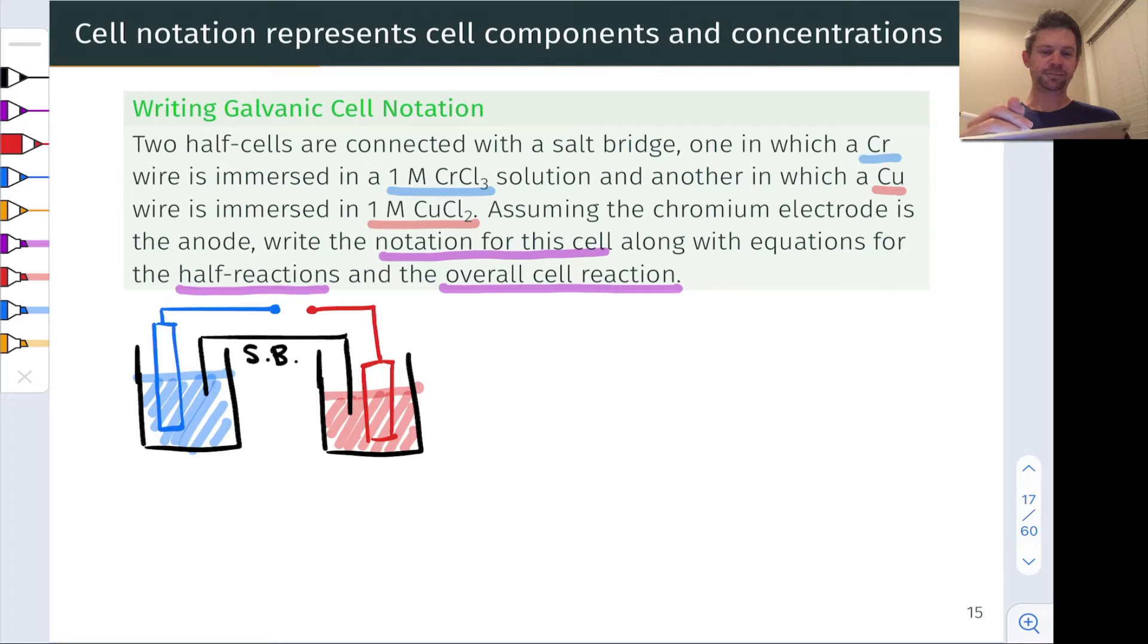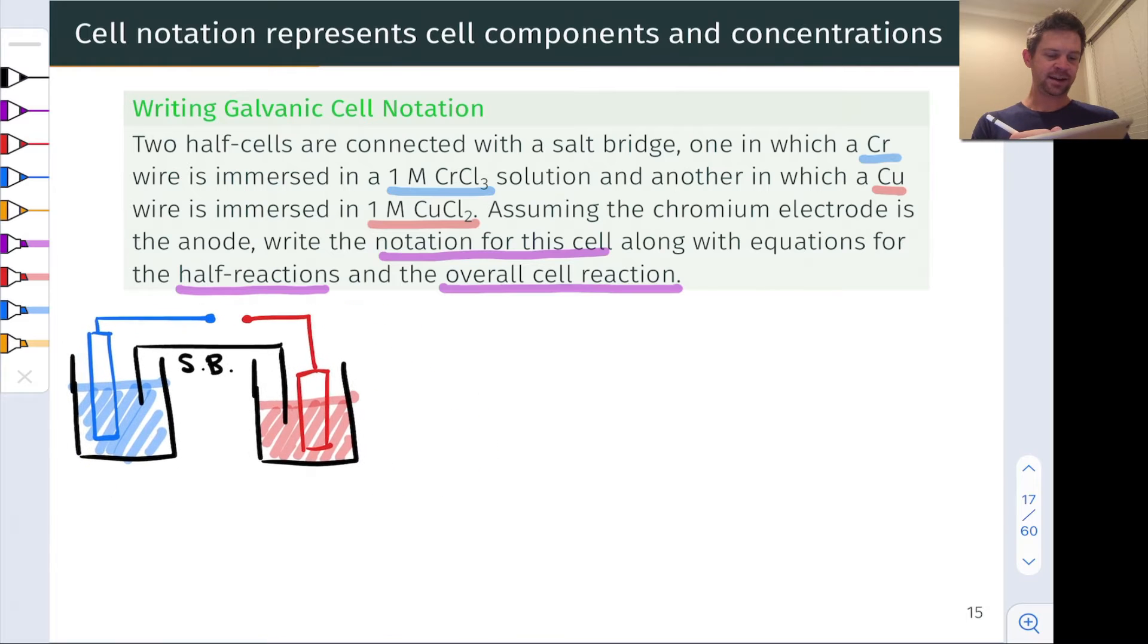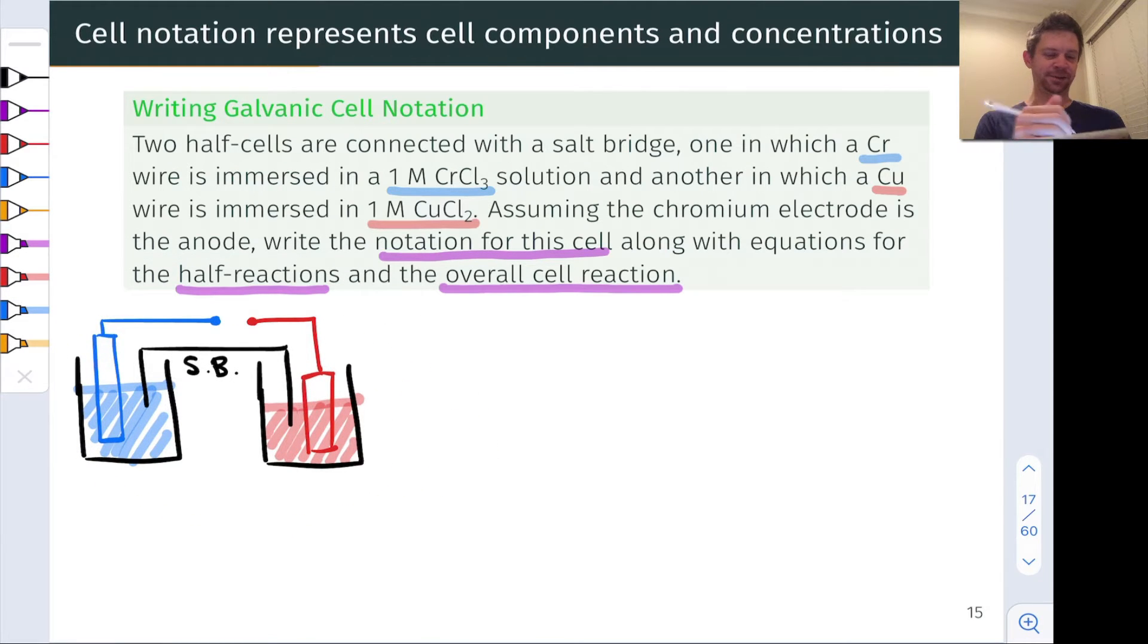All right, so here's a little schematic of the galvanic cell we're looking at here. The anode is color coded in blue and the cathode in red. And let's recall that the anode has chromium metal as the reduced component and a one molar solution of chromium-3 chloride as the oxidized component. So chromium is undergoing oxidation to chromium-3 and on the cathode side we have copper metal and we have a one molar solution of copper-2 chloride. And so it's evident here that copper-2 is undergoing reduction to copper metal.